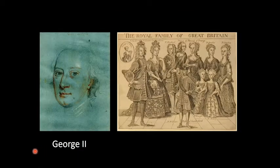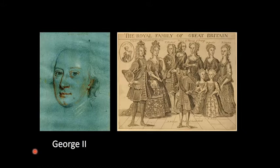George's reign saw increased production in coal mining, shipbuilding, and agriculture, together with a rapid rise in population. Overseas trade also grew following military interventions which gave Britain control of parts of India and Canada.